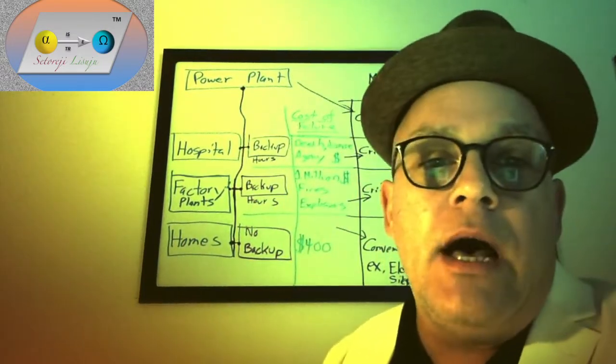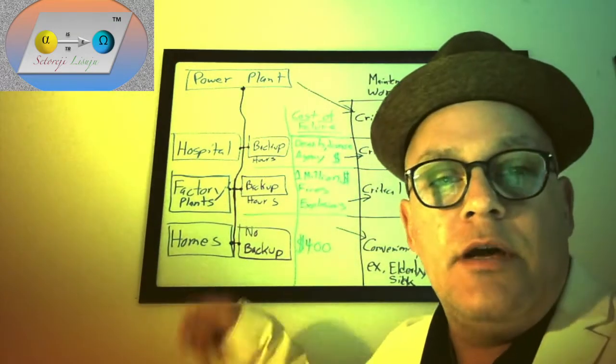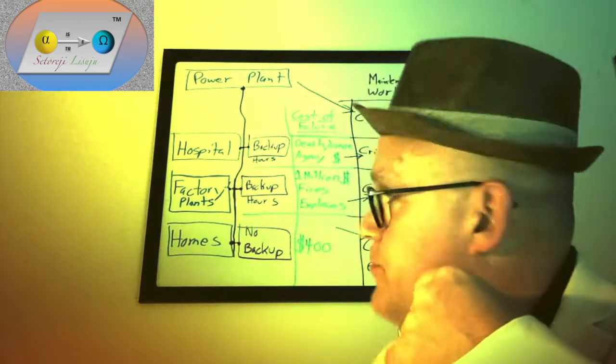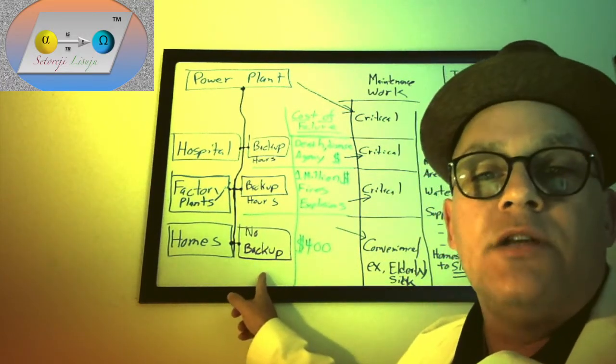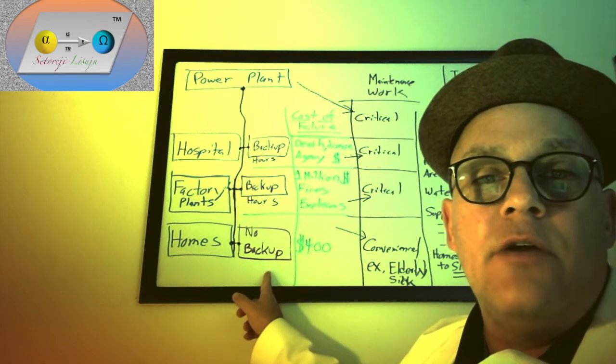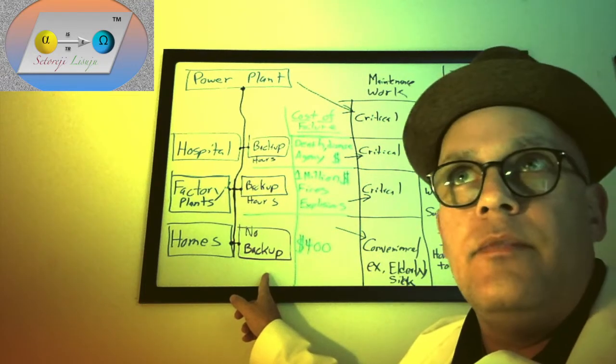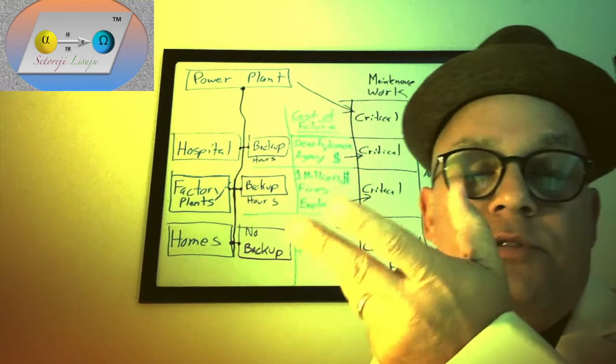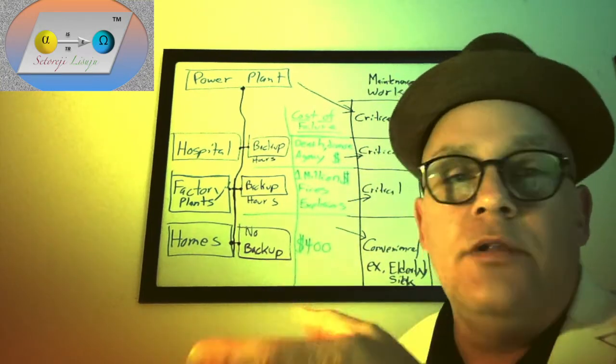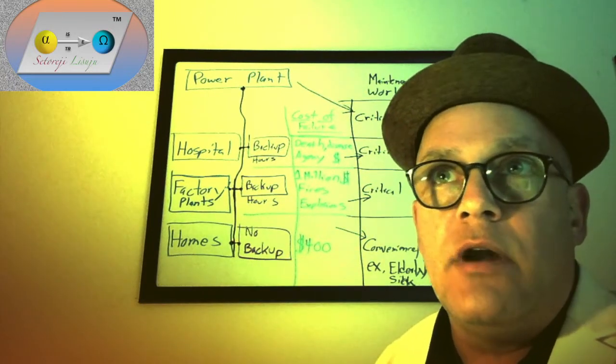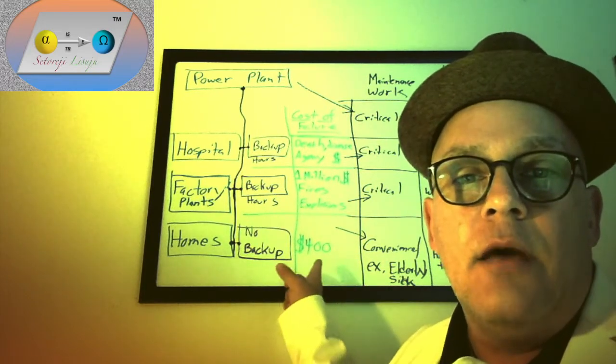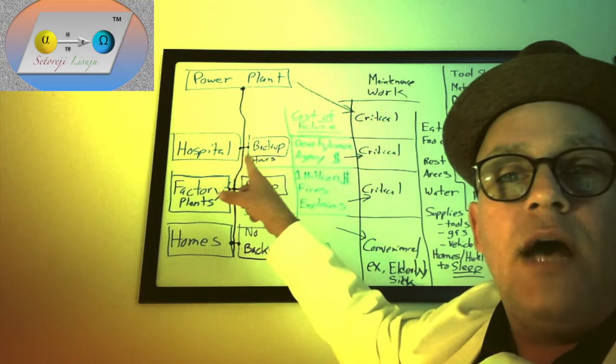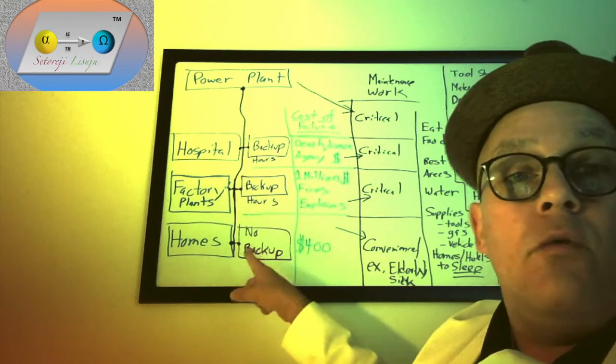We all have power coming into our house. You plug your lights in the wall, turn your air conditioners on, heaters, stove, microwave, whatever. However, homes typically don't have backup. Why? Because the cost of failure of home electricity is a week of groceries, about $400. Backup systems are $5,000 to $10,000, so it doesn't make economic sense.